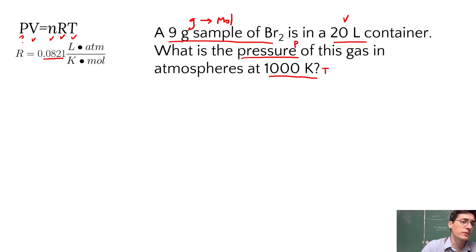I'm going to convert from mass to moles first. So I'm going to take my 9 gram sample of bromine and convert that using a proportion. 1 mole is equal to its formula weight. So grams go down here.